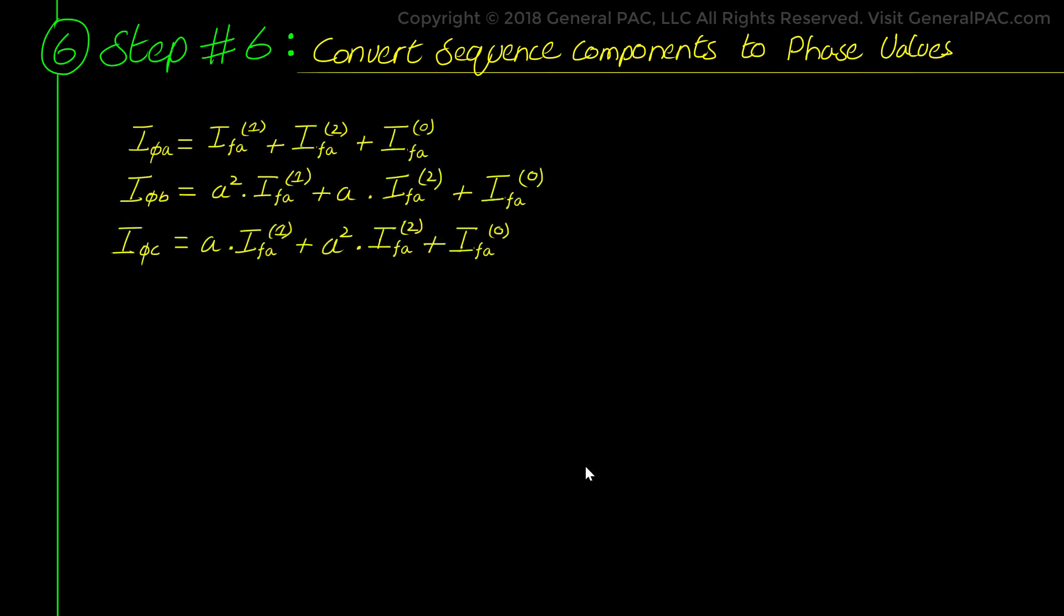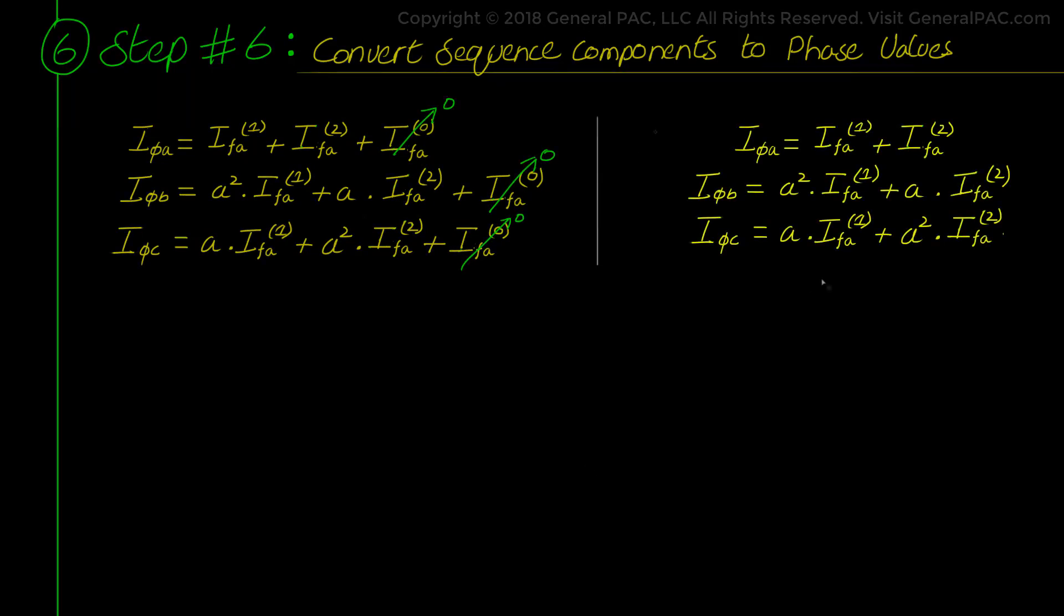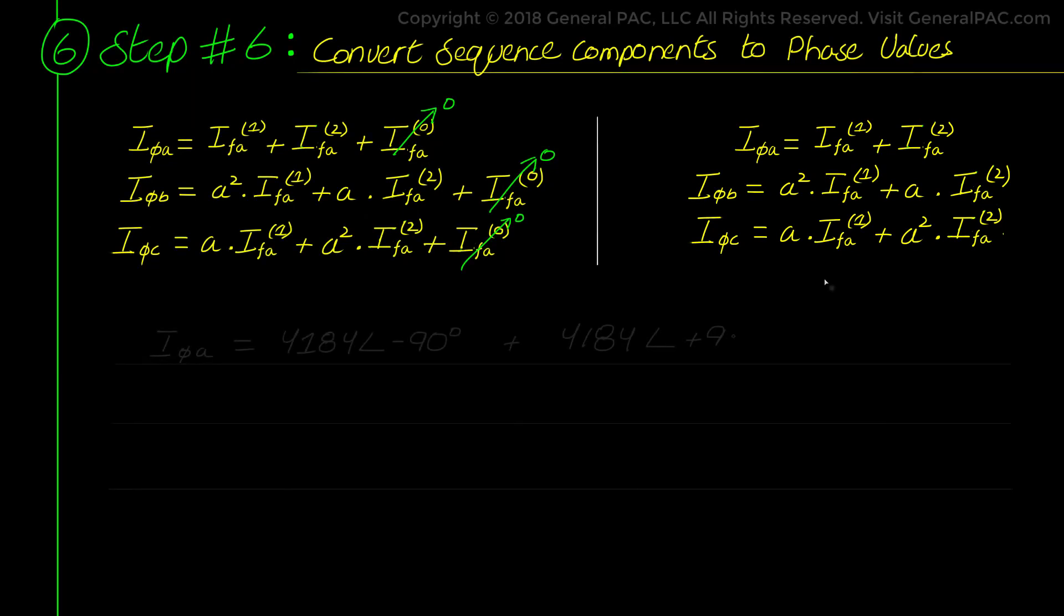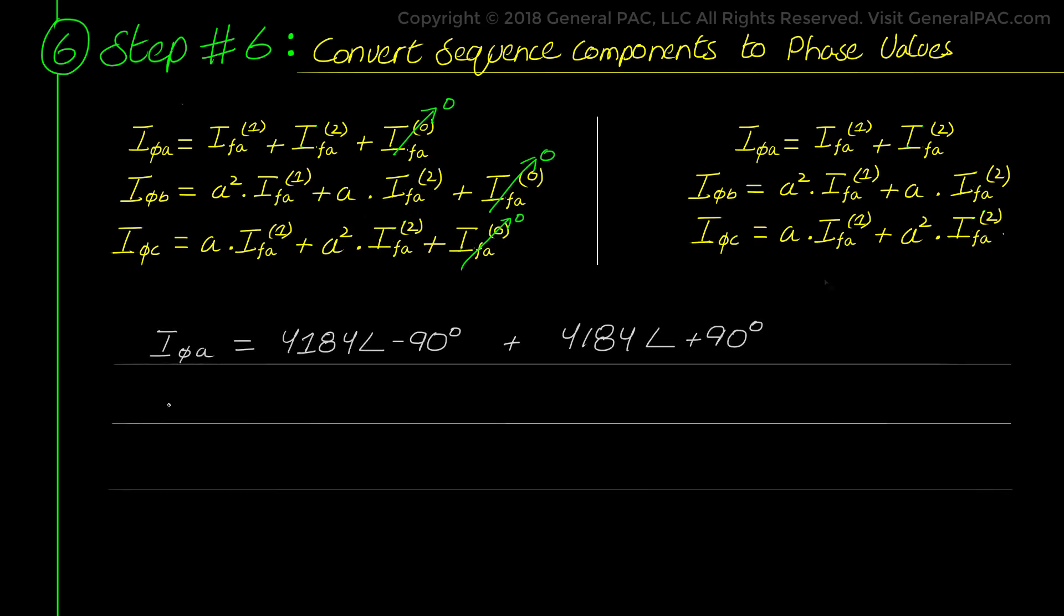Next we move to step number 6 to convert the sequence component values to phase current values. We have our old familiar set of three phase transformation equations. And since there is no zero sequence current they can be simplified even further to the following.